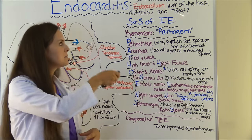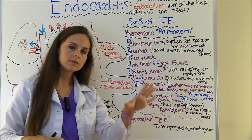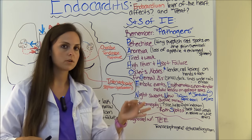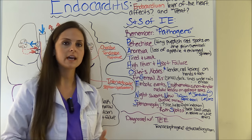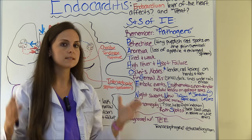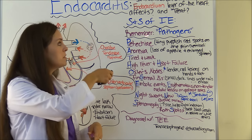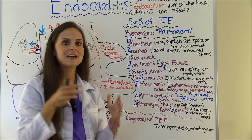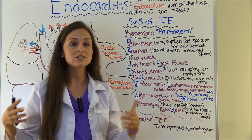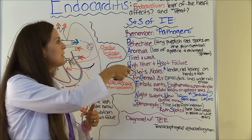Now let's look at the signs and symptoms of infective endocarditis. With non-infective endocarditis we have a sterile thrombus that hasn't become pathogenic yet, but here it has. To help you remember the signs and symptoms, use the mnemonic PATHOGENS — because pathogens are what is causing our problem. They've gotten in, attached to that thrombus, and started an infection.